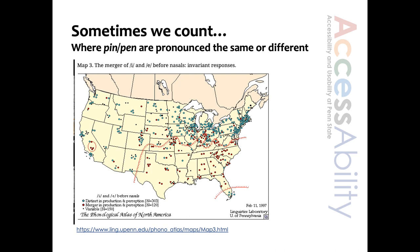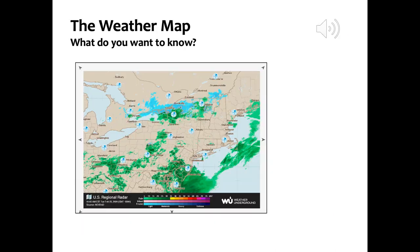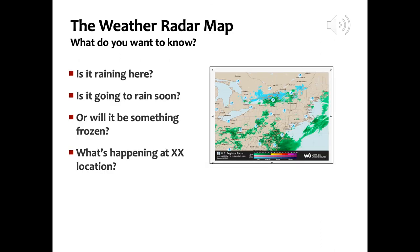The last case is probably one of the more challenging ones: a weather map, specifically a weather radar map. A tactile map would be difficult to produce with current technology and would not be able to be quickly updated. At some point, a system to dynamically create tactile graphics, perhaps on a grid of raised braille dots, could provide some good solution. For now, though, we probably need to find something else. Again, it's good to ask questions about what information people would like to know: Is it raining now? Will it rain soon? Is it anything frozen? Or what's happening somewhere else?